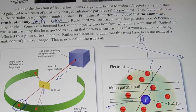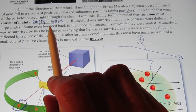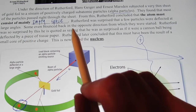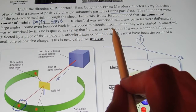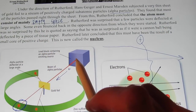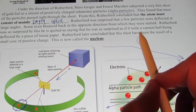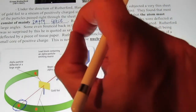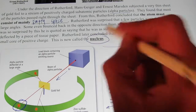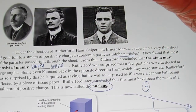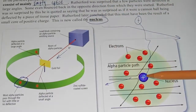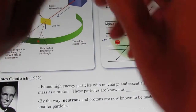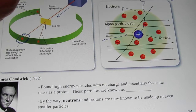Rutherford was surprised that a few particles were deflected at large angles and some even bounced back in the opposite direction. He is quoted as saying he was as surprised as if a cannonball had been deflected by a piece of tissue paper. He concluded this must be the result of a very small core of positive charge — protons concentrated in a tiny core called the nucleus. You should know the name Ernest Rutherford, credited with the discovery of the atomic nucleus. We'll continue in the next video talking about James Chadwick and the discovery of a third subatomic particle.